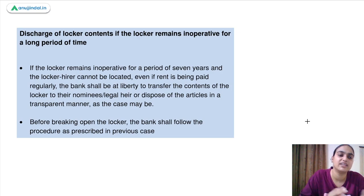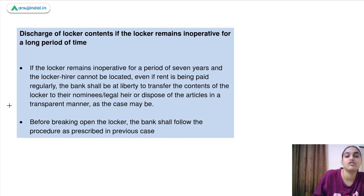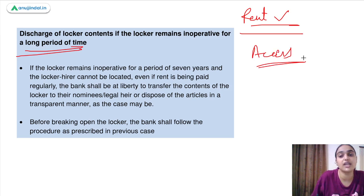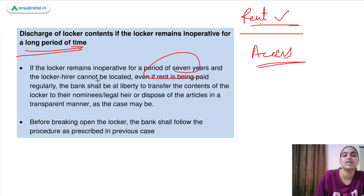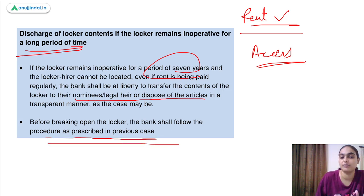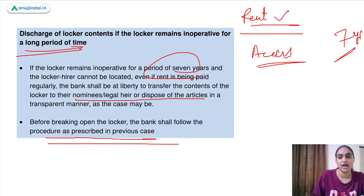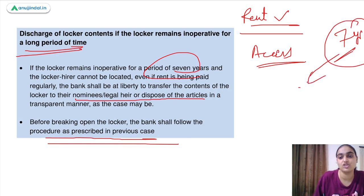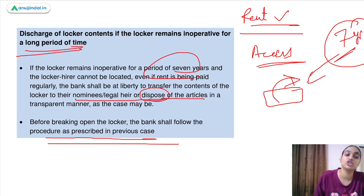If a locker remains inoperative for seven years and the locker hirer cannot be located — although the rent is being paid — the bank has the liberty to transfer the contents to nominees or legal heirs, or dispose of the articles following the same notice procedure as described for non-payment of rent.